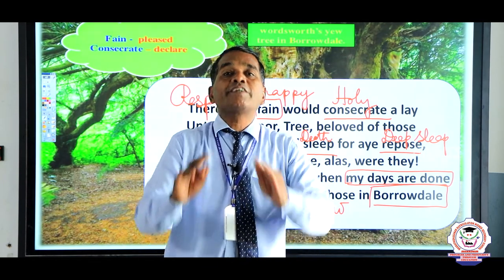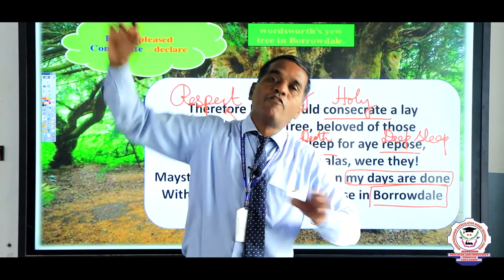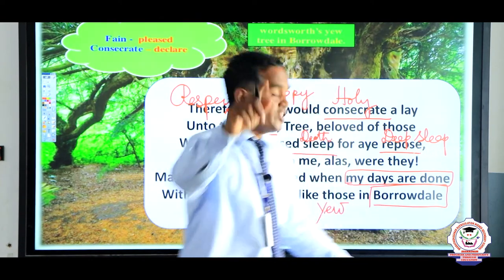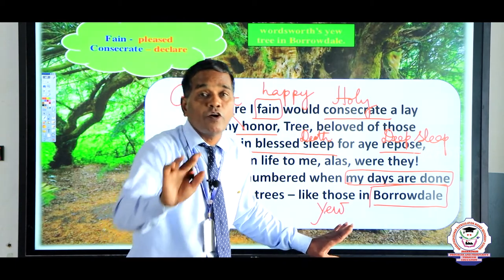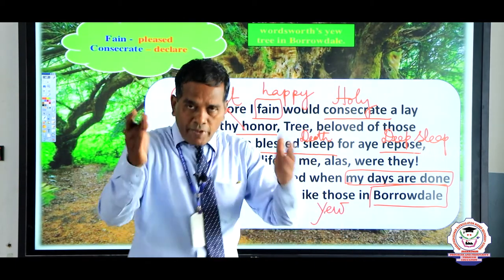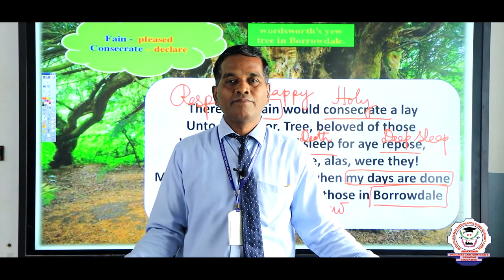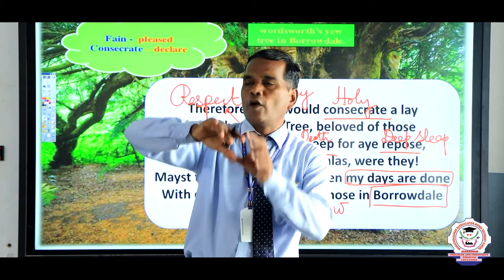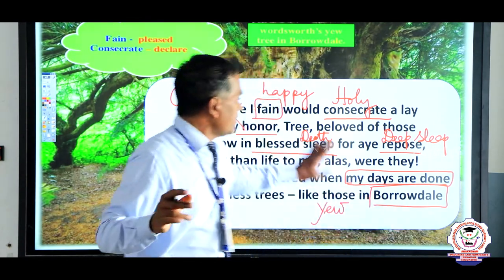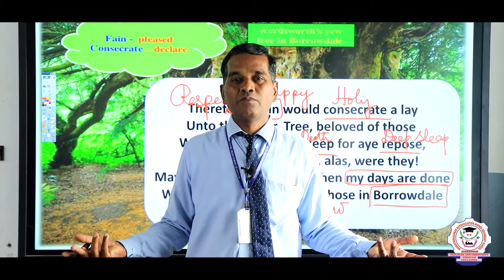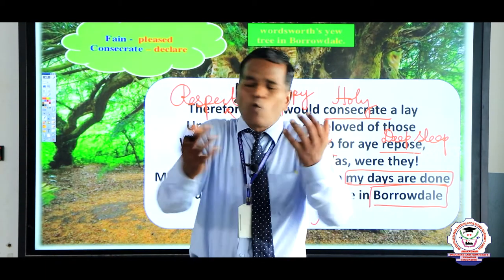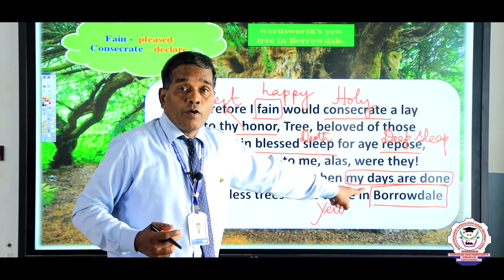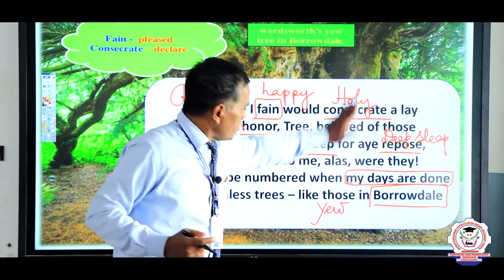The tree she wanted to give long life to is the cashew nut tree — just as William Wordsworth consecrated the yew tree in Borrowdale. Being a layman, a common person, she wanted to give a kind of consecration — respect, make it holy, give it immortal life. Though her friends and siblings are no more, she says the tree is dearer and closer to her. She tries to give immortality to the tree in these poetic lines.